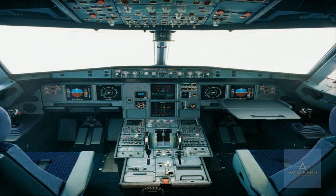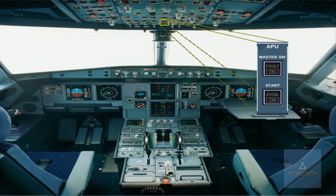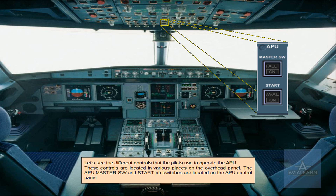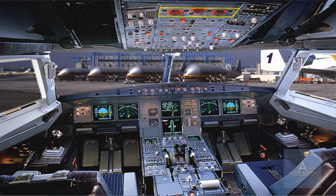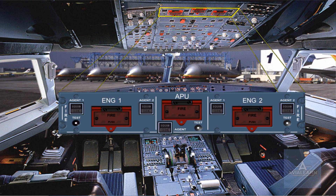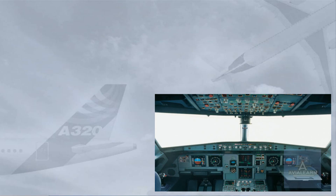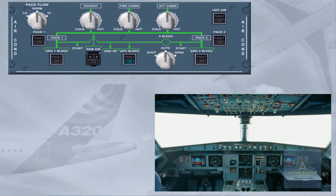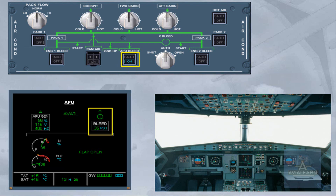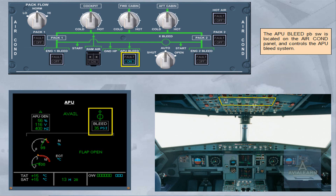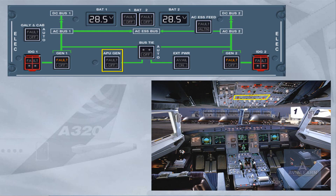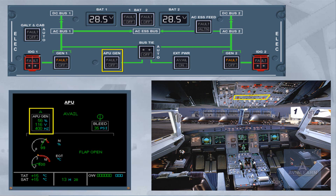Let's see the different controls that the pilots use to operate the APU. These controls are located in various places on the overhead panel. The APU master switch and start push-button switch are located on the APU control panel. APU fire controls are located on the fire panel; refer to the ATA 26 fire protection chapter for additional information. The APU bleed push-button switch is located on the air conditioning panel, and the APU gen push-button switch is located on the electrical panel.